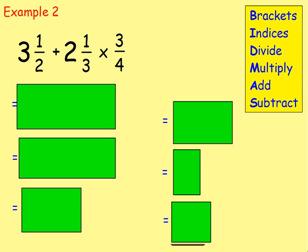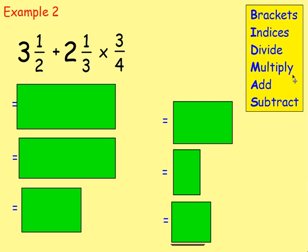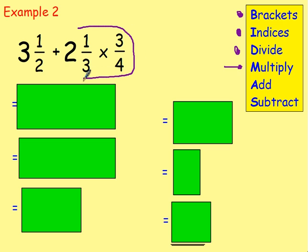Example two: three and a half plus two and one third multiplied by three quarters. We have an addition and a multiplication — two operations. We use BIDMAS to decide what to do first. Are there any brackets? No. Any indices — powers or roots? No. Is there a divide? No. Is there a multiply? Yes — two and one third multiplied by three quarters. That is what we would do first.